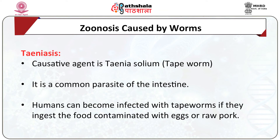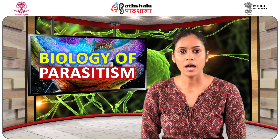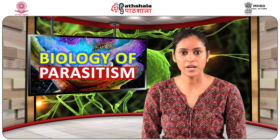Taeniasis is caused by the platyhelminth Taenia solium, commonly known as tapeworm. The adult tapeworm consists of many small segments known as proglottids, which contain eggs, break off from the tail end and pass into stool. It involves two hosts — human beings and pigs, with the pig as intermediate host. Humans can become infected with tapeworms by ingesting food contaminated with eggs or raw pork. Symptoms include intestinal irritation, anemia and indigestion, which can lead to loss of appetite and emaciation.